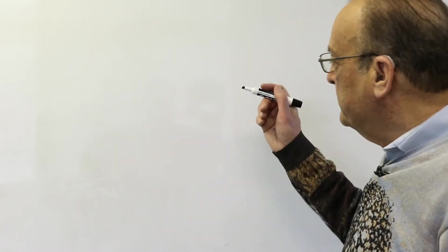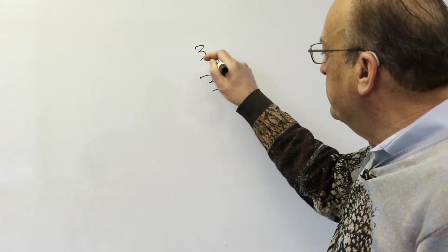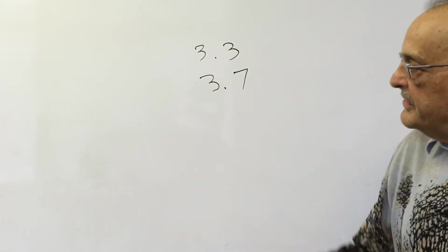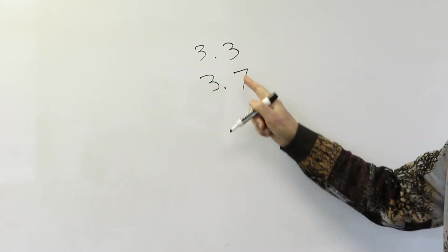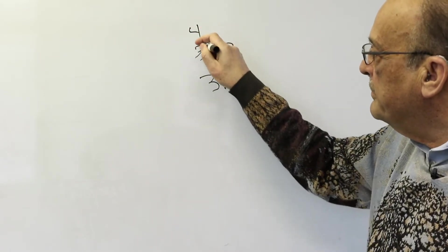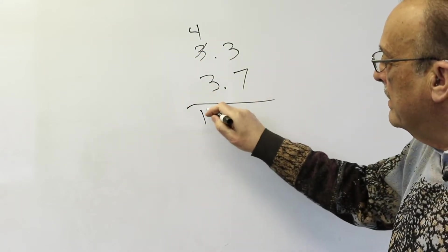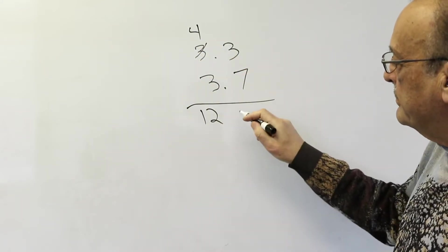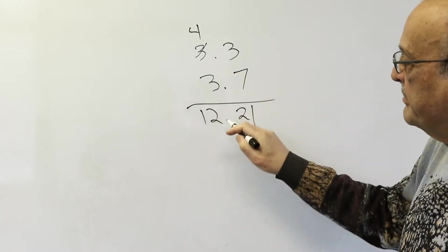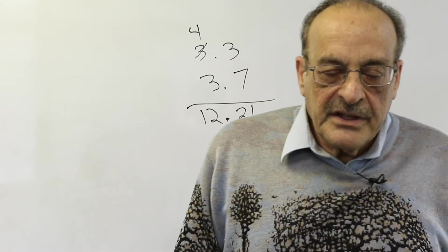For our next example we're going to make use of a trick. If you're going to multiply two numbers — for example 3.7 times 3.3 — notice that these two numbers have the same integer part and add to 10. In that case you cross the decimal out and make it one more: 3 times 4 is 12, and 7 times 3 is 21, and the decimal point goes there. So 3.7 times 3.3 equals 12.21. We'll be using that trick in the next example.